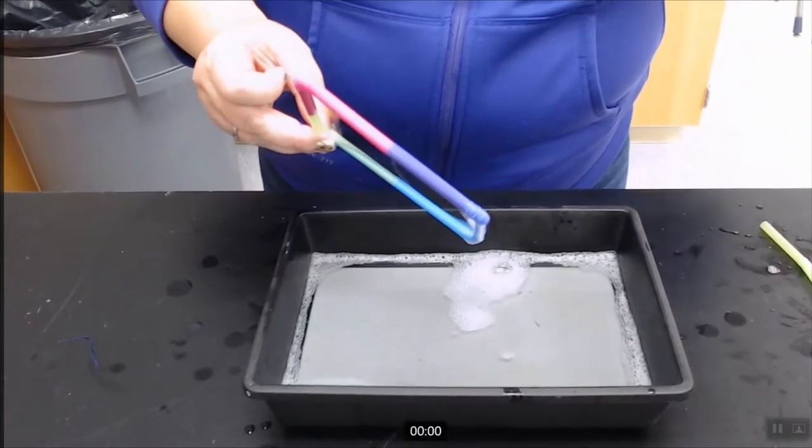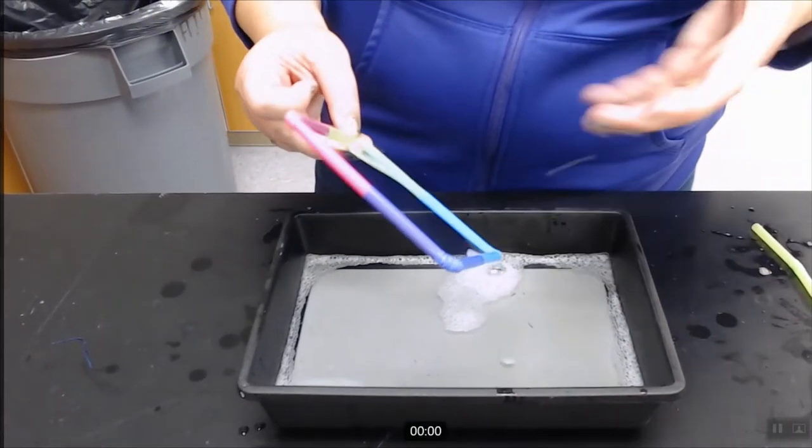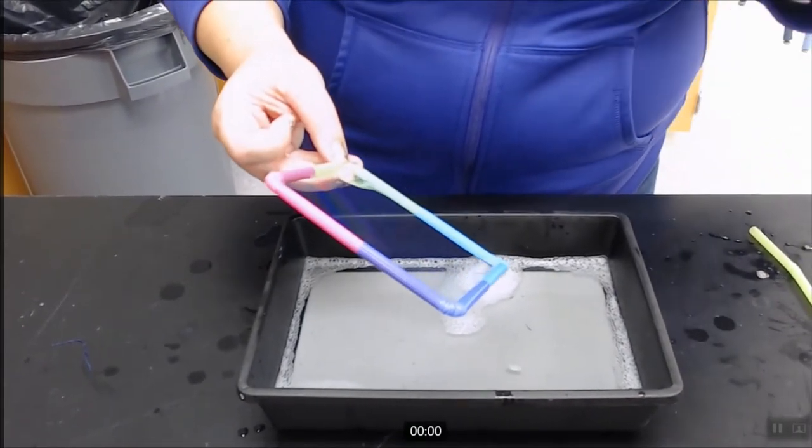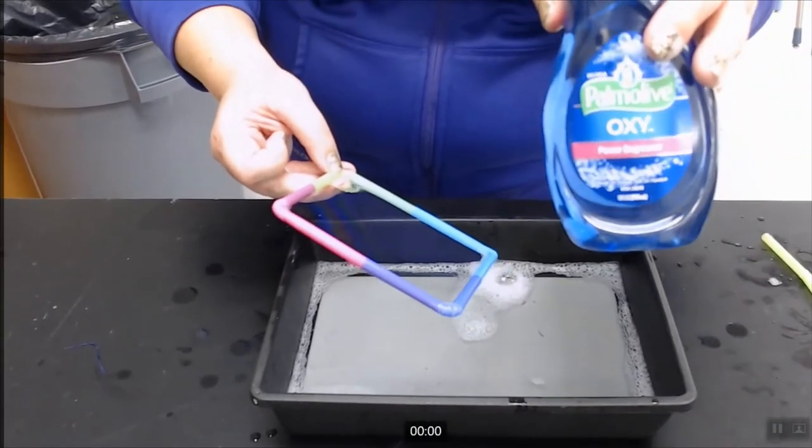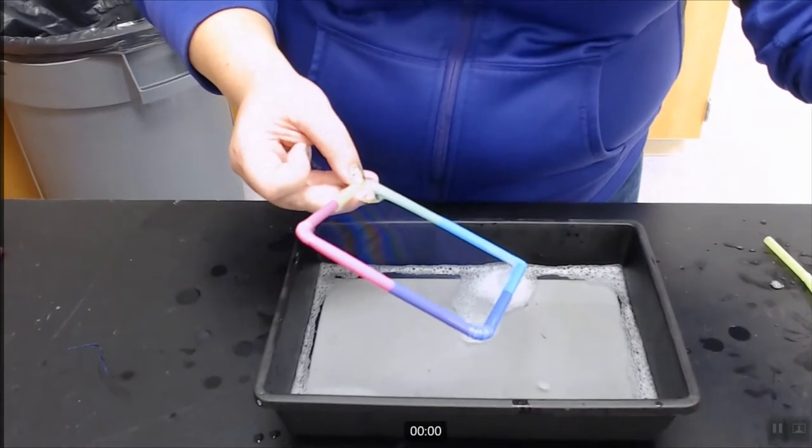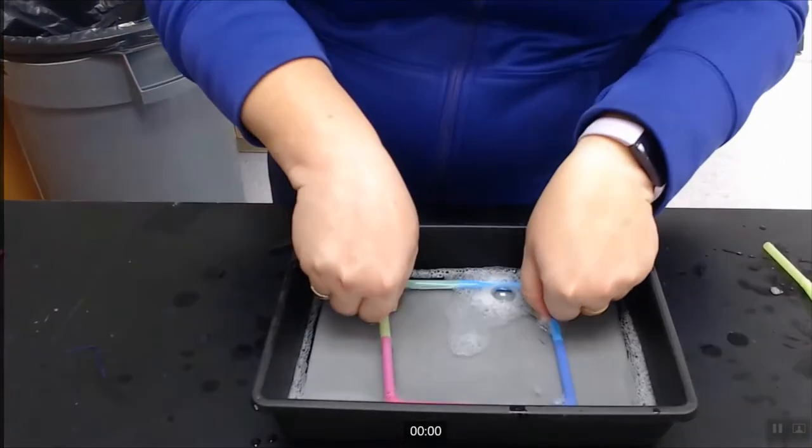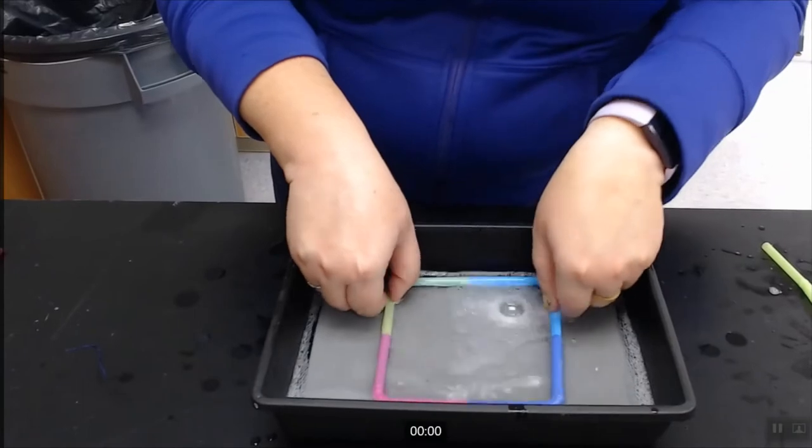Looking at our cell membrane, we're going to use a humble bubble as our analogy for the cell membrane. So we've just taken some dish detergent and water and made a soap solution, and I've made a bubble frame just out of some bendy straws.